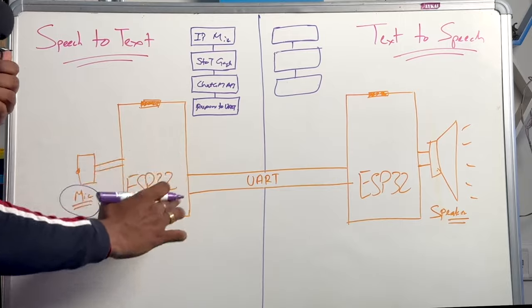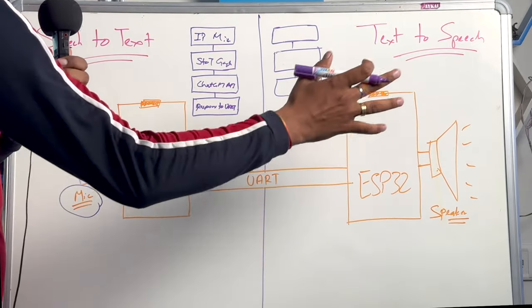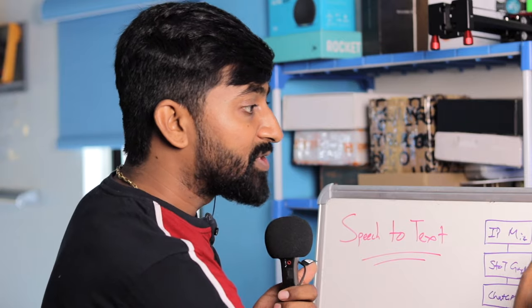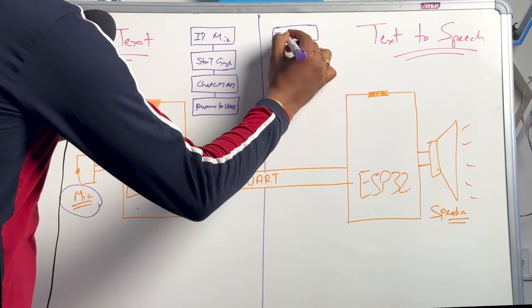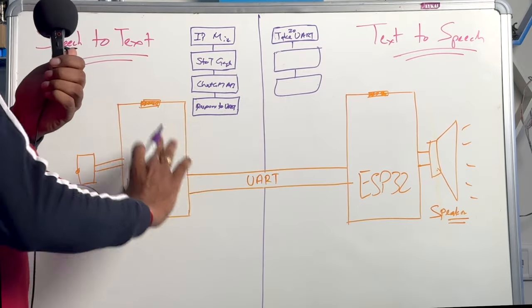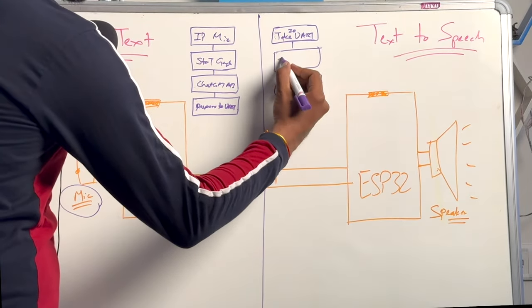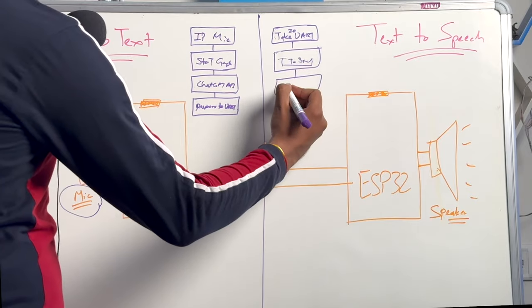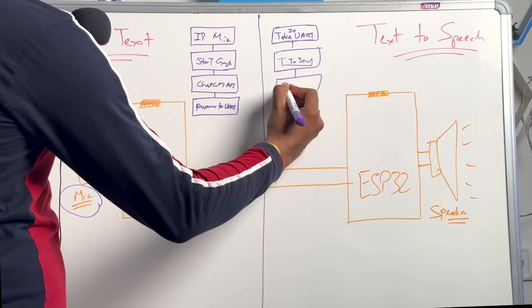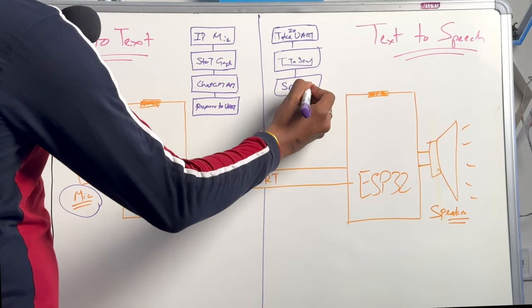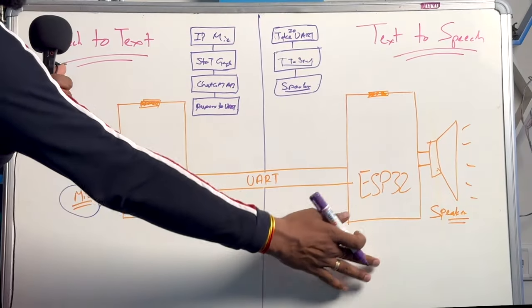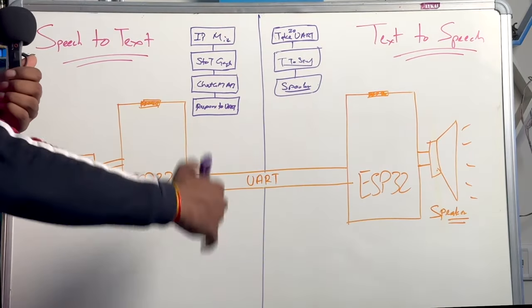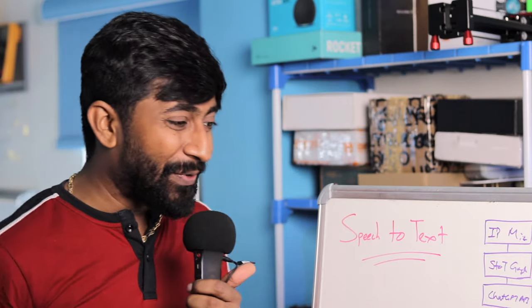So those four tasks are performed by the first ESP. Once we get the response, the second ESP comes into the picture. It takes the input from UART — whatever response was sent — then sends it to the text-to-speech conversion using a built-in function, and finally gives the audio output to the speaker. These three tasks are performed by the second ESP32, and that's how we are able to make our own voice assistant based on ChatGPT with the help of two microcontrollers.